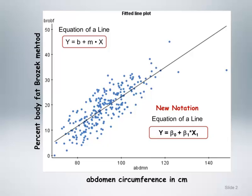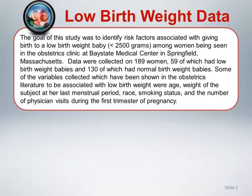We will use the low birth weight data to illustrate the basic ideas of simple logistic regression. The goal of this study was to identify risk factors associated with giving birth to a low birth weight baby, defined as weighing less than 2,500 grams, among women being seen in the obstetrics clinic at Bay State Medical Center in Springfield, Massachusetts. Data were collected on 189 women, 59 of which had low birth weight babies and 130 of which had normal birth weight babies. Some of the variables collected which had been shown in the obstetrics literature to be associated with low birth weight were age, weight of the subject at her last menstrual period, race, smoking status, and the number of physician visits during the first trimester of pregnancy.